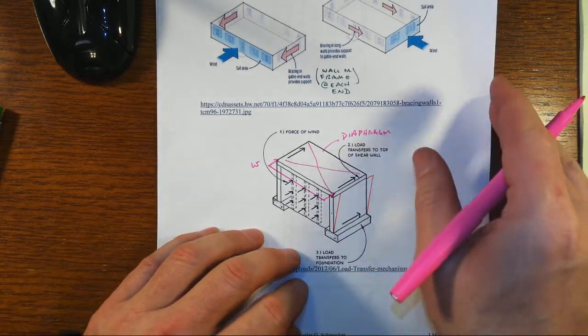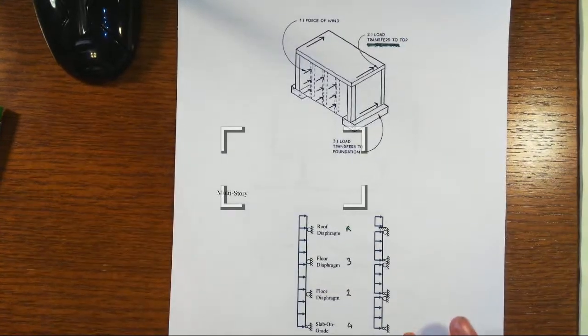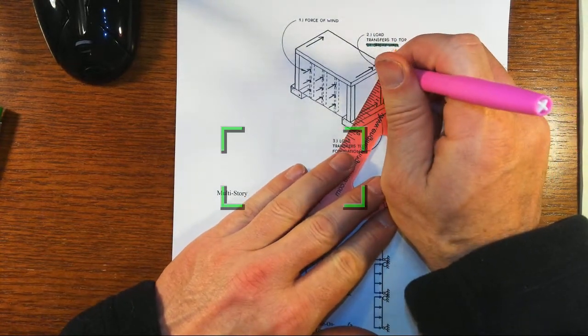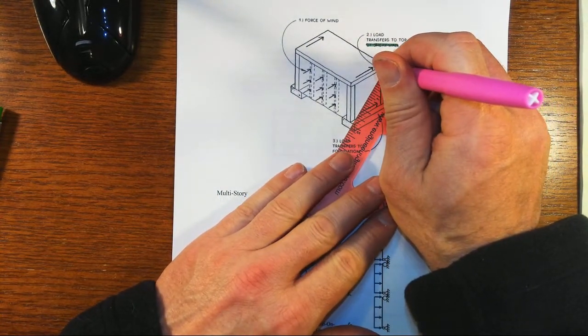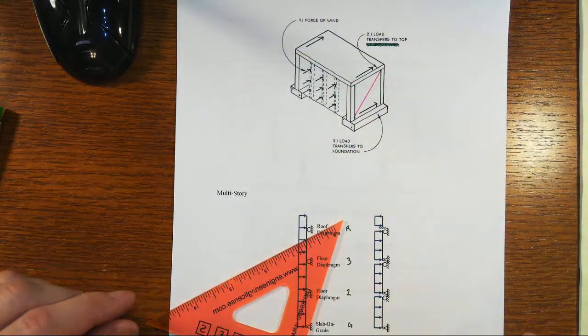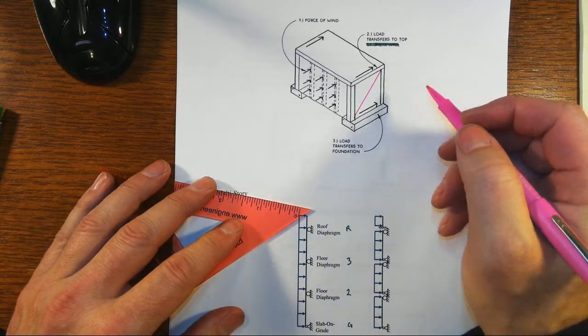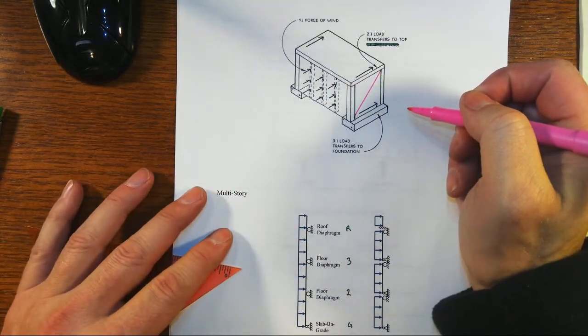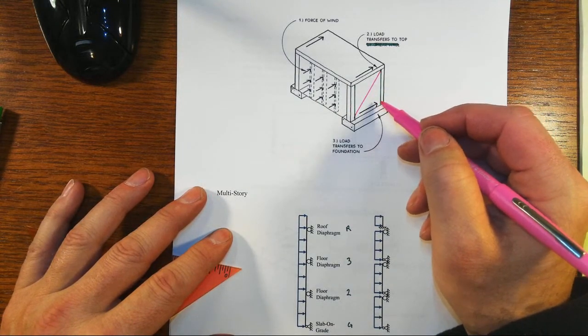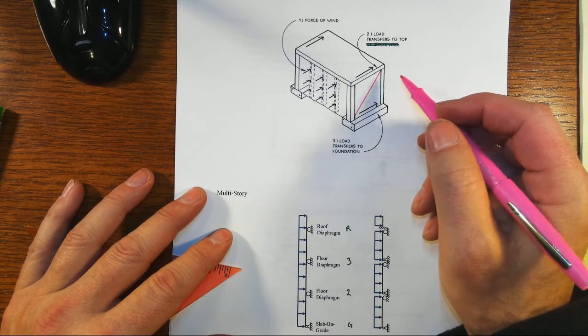Now of course those ends don't have to be shear walls, they could instead be moment frames, they could be braced frames. They would generally in a house either be a wall or a simple braced frame, a fairly simple kind of system. But usually in a simple building, one-story building, these will be shear type walls as opposed to any other kinds of situations until you get into certain kinds of commercial construction or the loads get high enough that you need something more structurally robust.